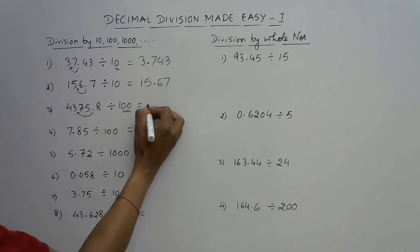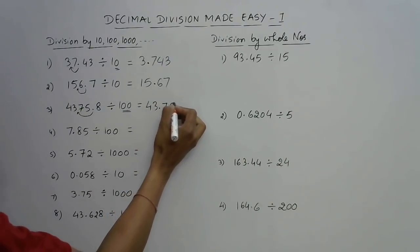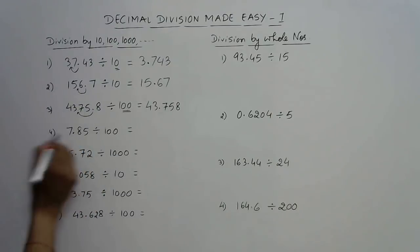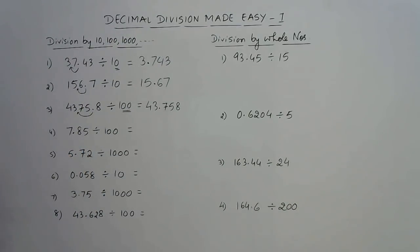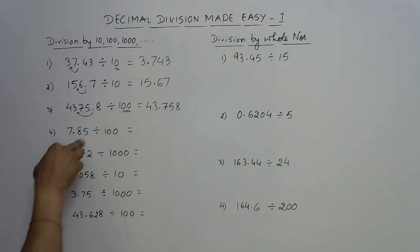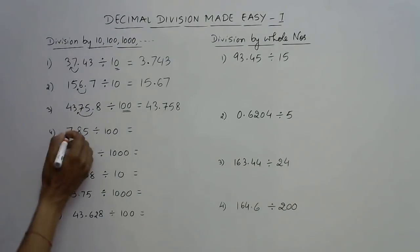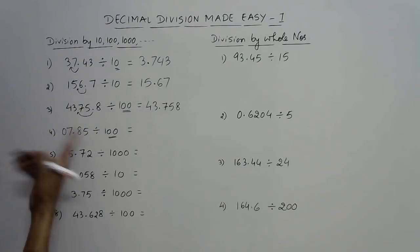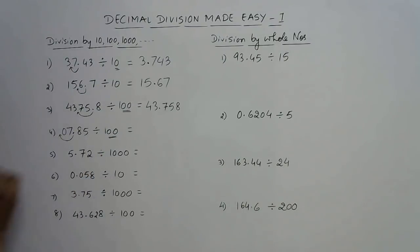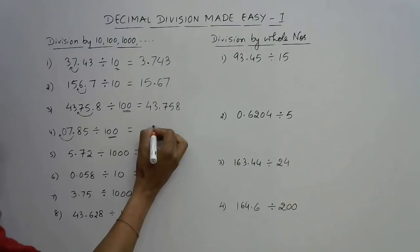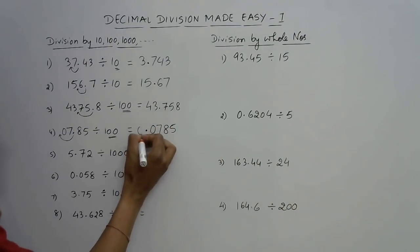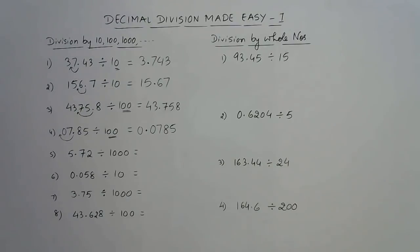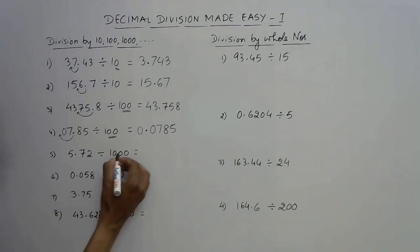Now we need to be careful here. We have only one digit before the decimal and two digits after, but we need to move the decimal two places towards the left because we have two zeros. Since there is no digit before 7, we put a zero there — it makes no difference — and shift the decimal two digits left, giving us 0.0785 as the answer.